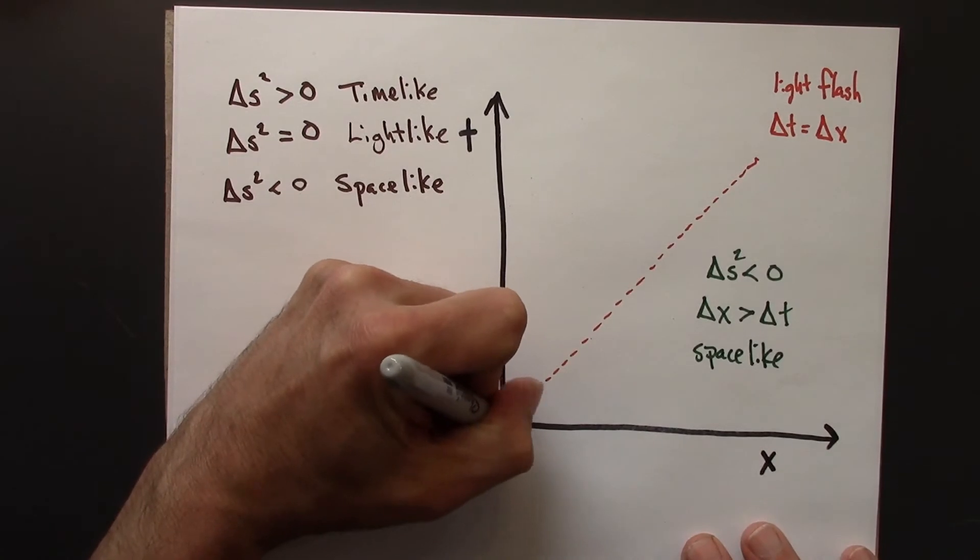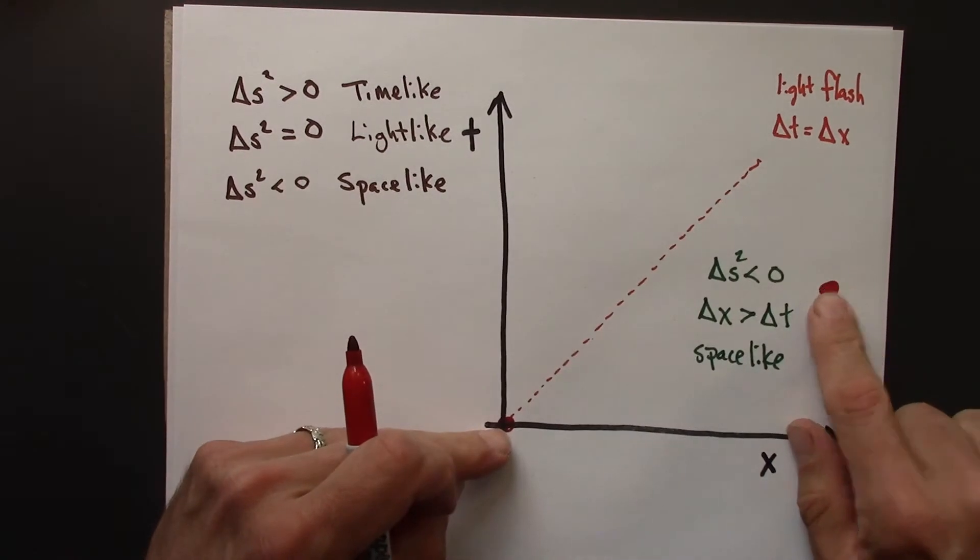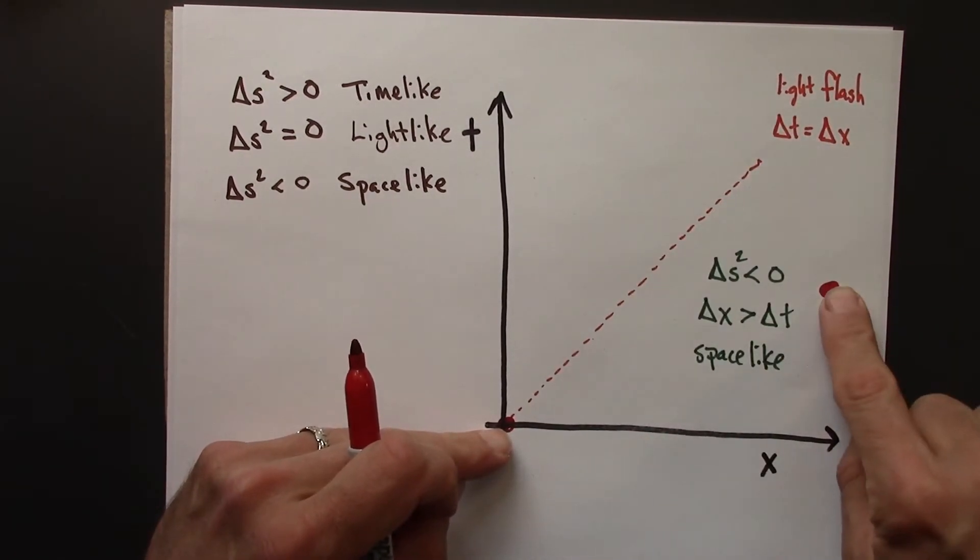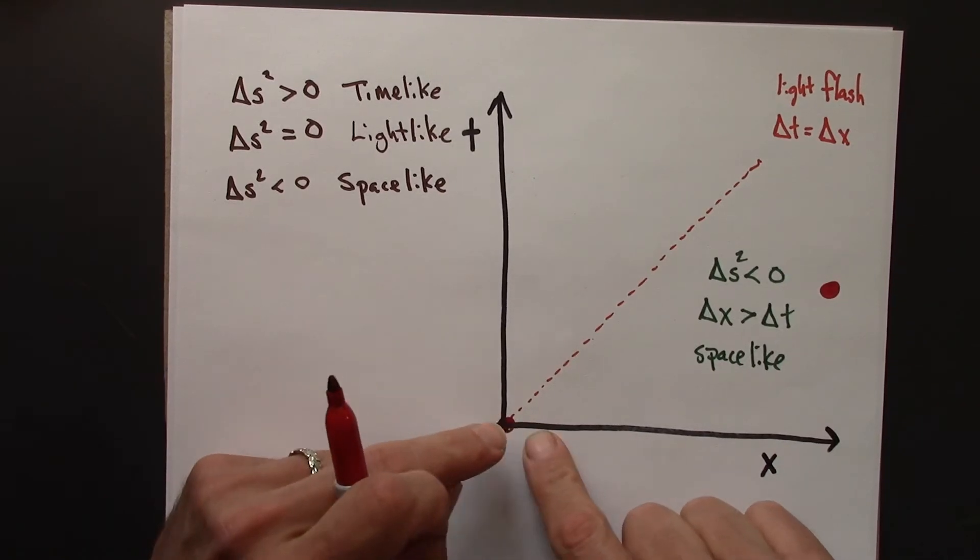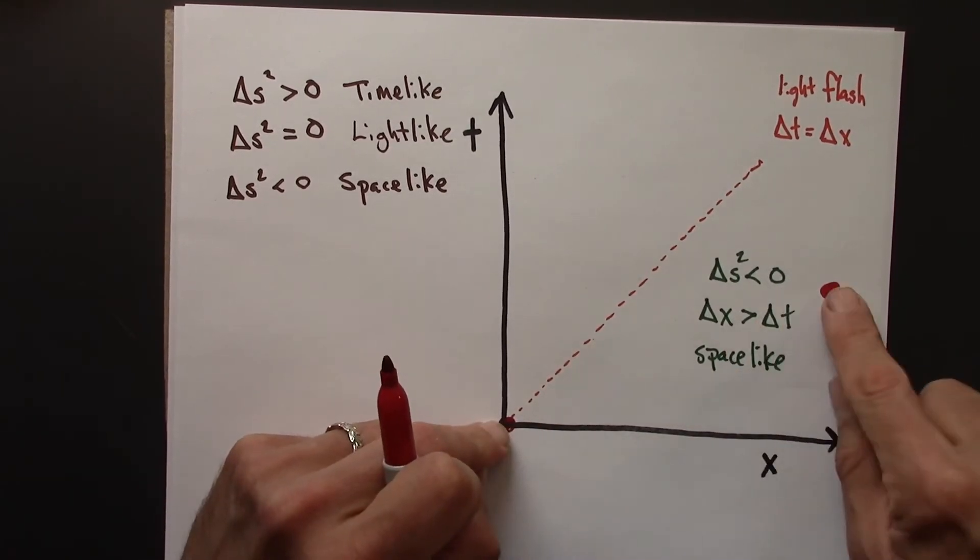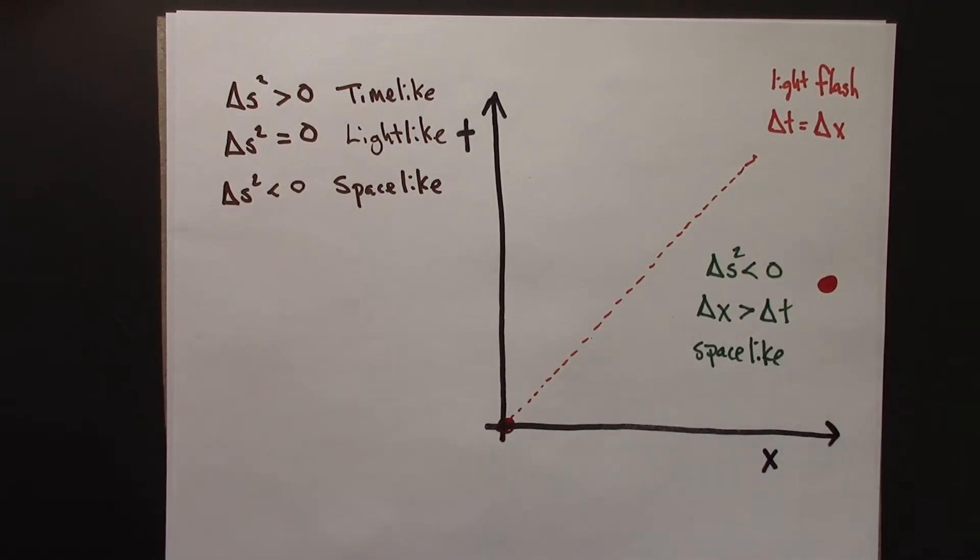So one event at the origin, another event anywhere over here, anywhere in this triangle, will be space-like. Why? Because there is some other reference frame where these two events are simultaneous, and so the only difference between them is spatial and could be measured with a ruler.